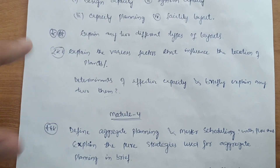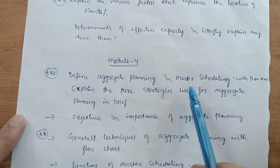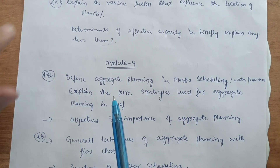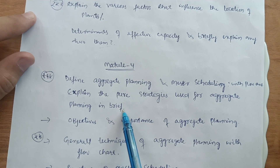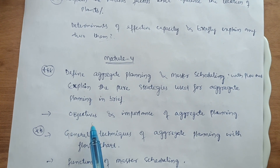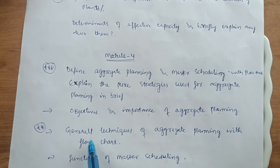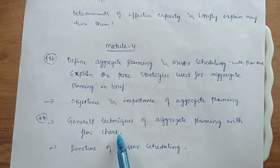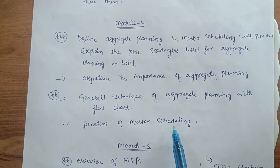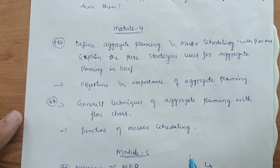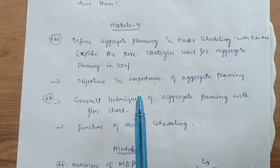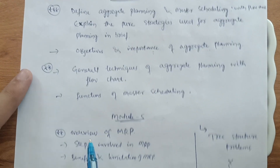Module 4 covers aggregate planning and master scheduling — sometimes they ask with a flowchart. The important questions are: define aggregate planning and master scheduling, explain the pure strategies used for aggregate planning, and the objectives and importance of aggregate planning. Also frequently asked is: explain the general techniques of aggregate planning with a flowchart. Focus on the functions of master scheduling as well. This content is enough for Module 4 to score up to 20 marks.